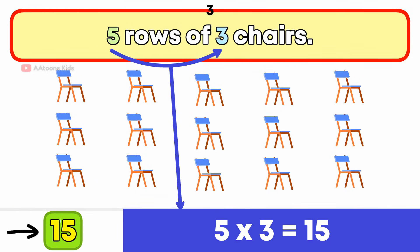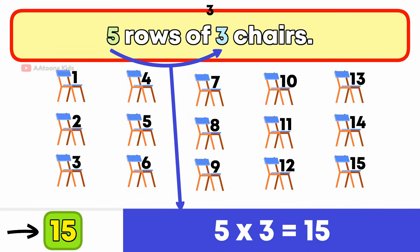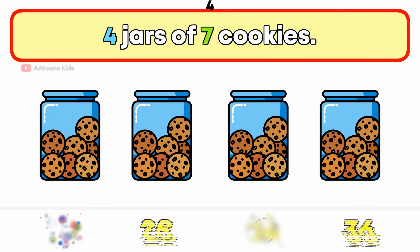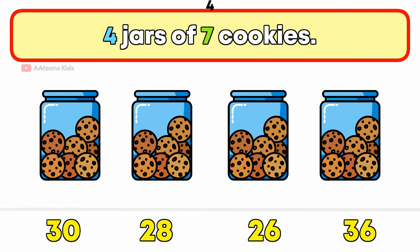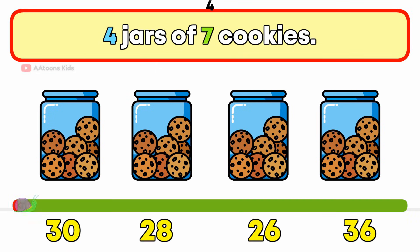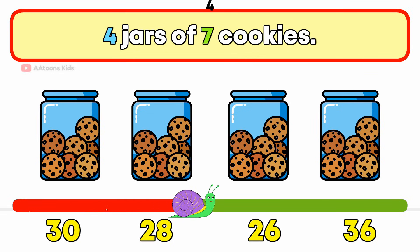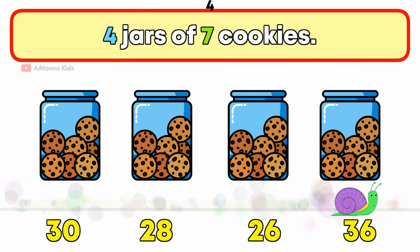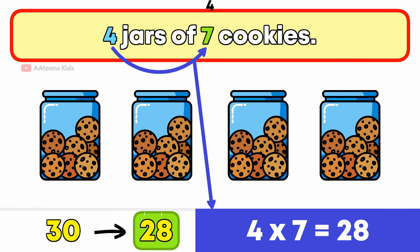4 jars of 7 cookies. How many cookies are there in 4 jars? 28 cookies.